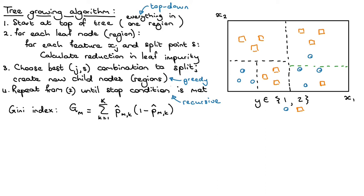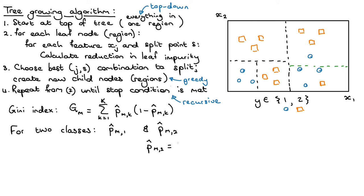Let's consider the case for two classes. In this binary classification task we just have two classes, but the Gini index works for an arbitrary number of classes. In a specific region, we calculate the proportion of points from class one and the proportion from class two. For a binary classification task, the proportion from class two will always be one minus the proportion from class one.